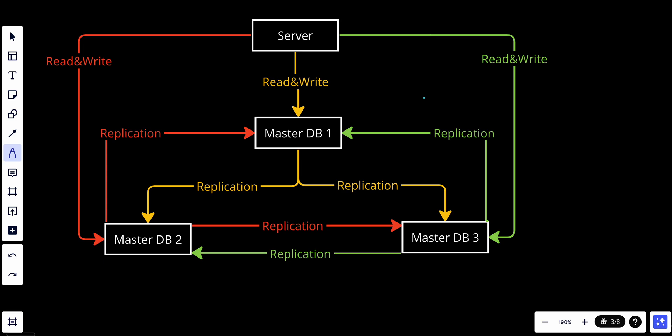Since multiple nodes can accept write operations, conflicts can occur when two or more nodes simultaneously receive conflicting changes to the same data. Conflict resolution mechanisms are required to handle such situations and maintain data consistency. We will make a dedicated video specifically about how conflict resolution works, but you should know that options include versioning, a coordinator, and multiple other approaches.